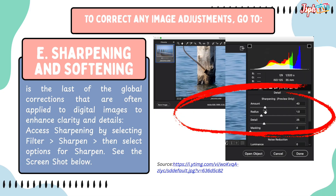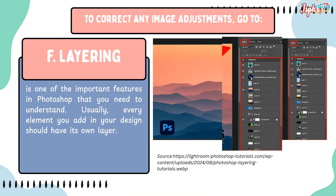Sharpening and Softening are among the last global corrections often applied to digital images to enhance clarity and detail. Access Sharpening by selecting Filter, then Sharpen, then select options for Sharpen. Layering is one of the most important features in Photoshop — every element you add to your design should have its own layer.